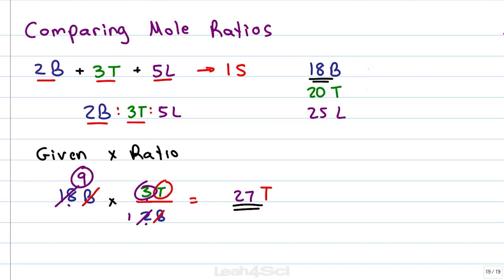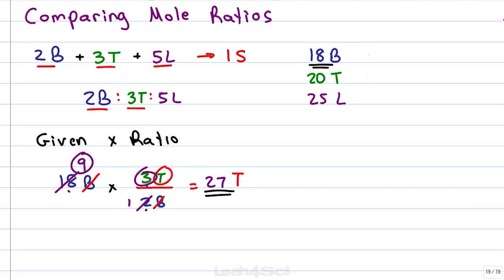Now, looking at turkey and lettuce, I have less turkey. I can guess again that turkey is my limit but I want to verify, I want to check by running a turkey to lettuce ratio just as we did for the bread. Setting it up as given times ratio, my given is 20 slices of turkey.